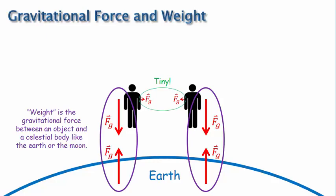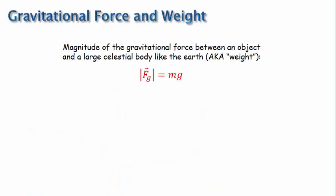The equation for the magnitude of this gravitational force, or weight, is this. Or it's sometimes represented with a W for weight. In this equation, m is the mass of the object, and g is the gravitational acceleration.